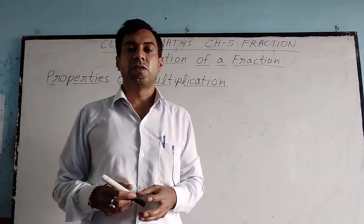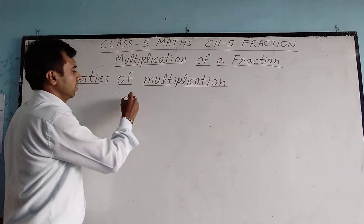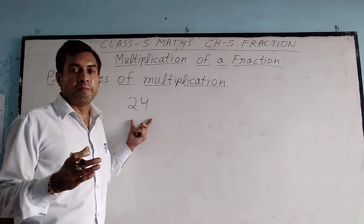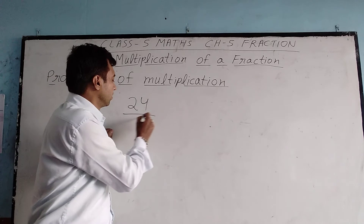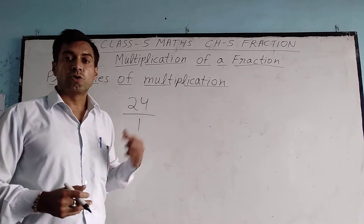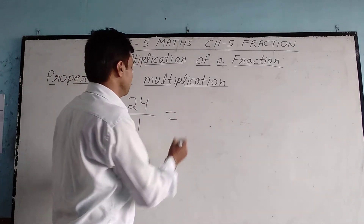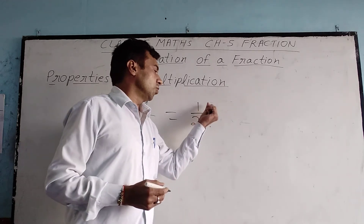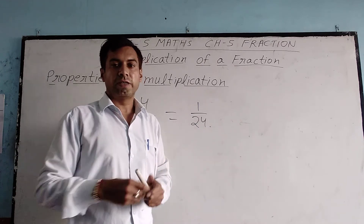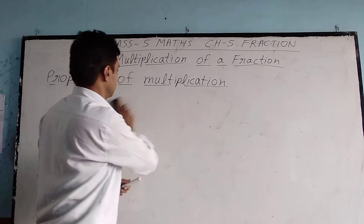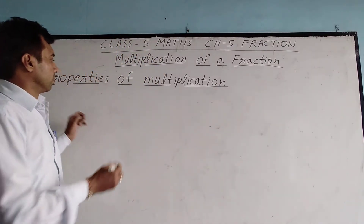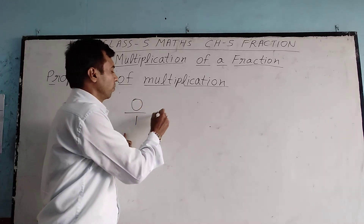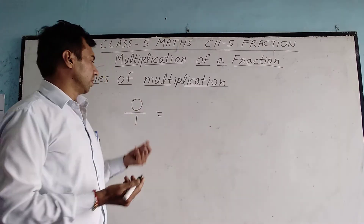Now, the multiplicative inverse of a whole number. For example, take the whole number 24. When we write a whole number with nothing in the denominator, it means the denominator is 1. So the multiplicative inverse of 24 is 1 by 24. Since the numerator is 1, this is a unit fraction. The multiplicative inverse of a whole number is 1 by that number.